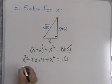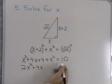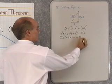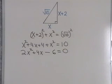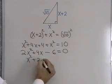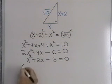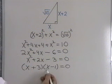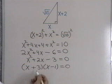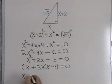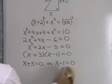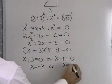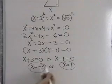Dividing both sides by 2 gives x² + 2x − 3 = 0. Factoring: (x + 3)(x − 1) = 0. Setting each factor to zero: x + 3 = 0 gives x = −3, and x − 1 = 0 gives x = 1. I get two possible solutions: x = 1 and x = −3. Since x represents the length of a side, it can't be negative, so I disallow x = −3. Therefore x = 1 is the only solution, giving sides of 1, 3, and √10.